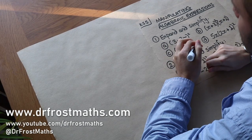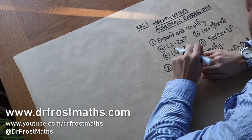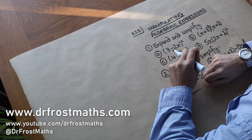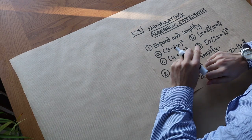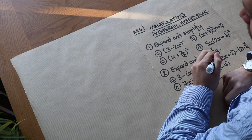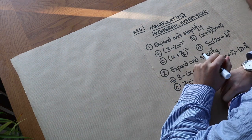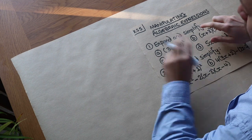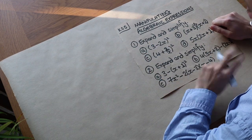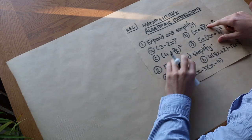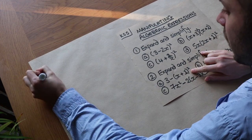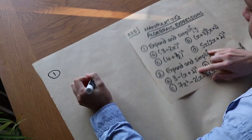Hello and welcome to this Dr Frost's Maths video on Key Stage 5 Manipulating Algebraic Expressions. It's assumed here that you have some familiarity with expanding brackets from GCSE or some other qualification. However, I wouldn't take this for granted, and we'll be looking at some harder examples as well as the more basic types. So let's dive straight in, mainly looking at expanding brackets and collecting like terms.